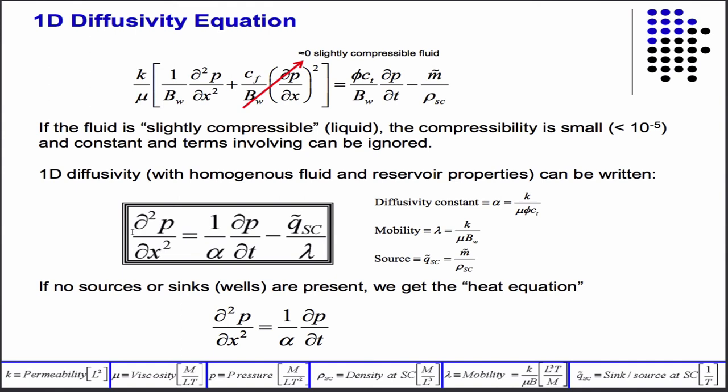So then just grouping some terms of our simplified equation, we get this 1D diffusivity equation, where we've grouped some terms, namely alpha is these guys, mobility. So I don't know if I use the q, but q is m over rho c. I don't know if I used that when I derived it. But q is just m over rho c. And so then if you just group some terms, you can define this lambda, which is the mobility, which is these guys. So it's defined there.